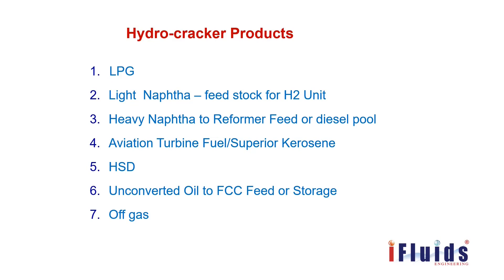The products from the hydrocracker unit are: LPG; light naphtha, which is feedstock for the hydrogen generation unit; heavy naphtha, which is feedstock for the reformer unit to produce good quality gasoline (MS or petrol) or can be diverted to the diesel pool; aviation turbine fuel or superior kerosene; HSD; and unconverted oil, which is feedstock to downstream units or the FCC unit. Off-gas produced is used as fuel in the refinery.